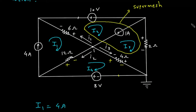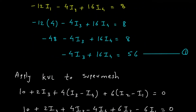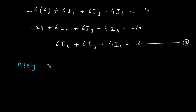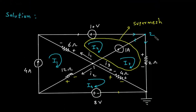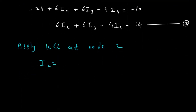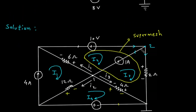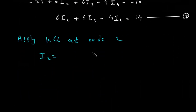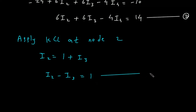Now, at node number 2 we will apply KCL. The incoming current is I2, and the leaving currents are 1 ampere and I3. So applying KCL at node 2: I2 equals 1 plus I3, which gives I2 minus I3 equals 1. Let's say this is equation number 3.